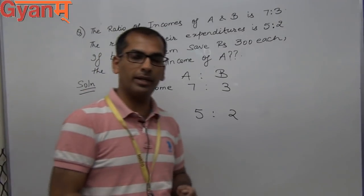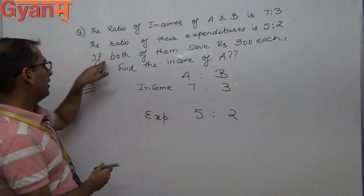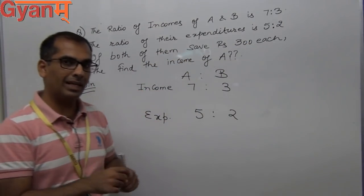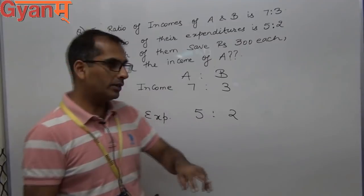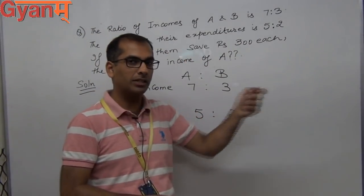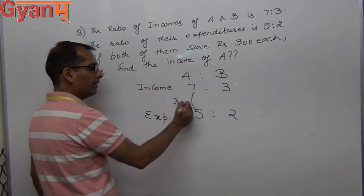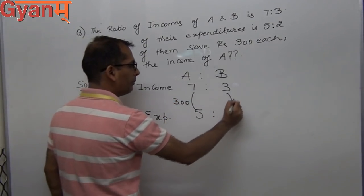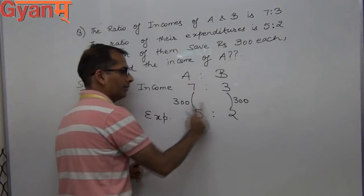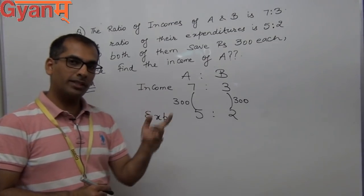I am talking about the relation between income, expenditure, and saving because both of them save rupees 300 each. That means the saving done by A is rupees 300 and the saving done by B is also rupees 300, so the savings are the same.